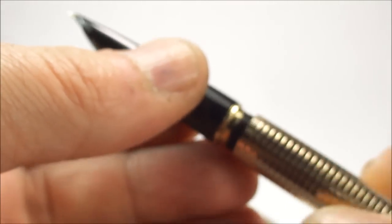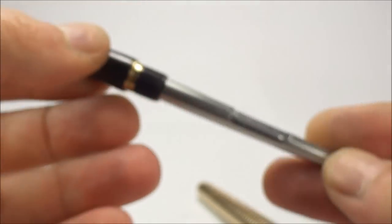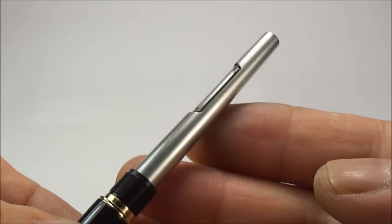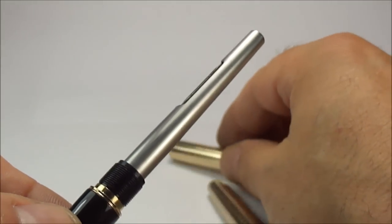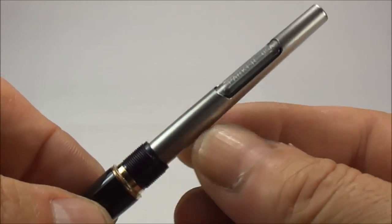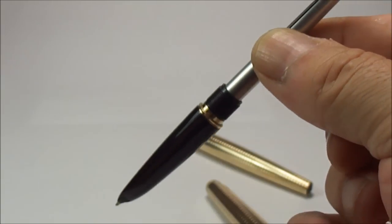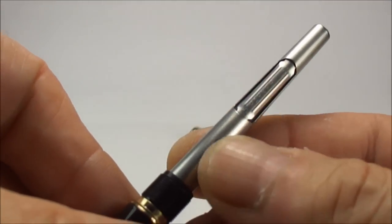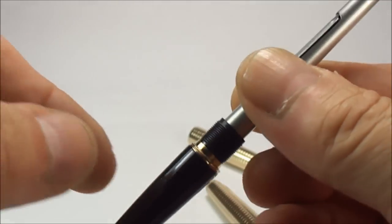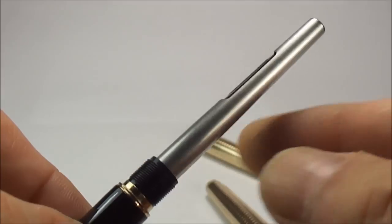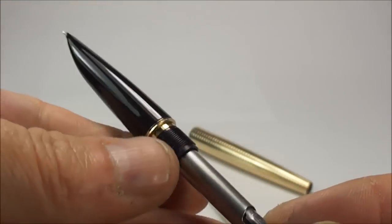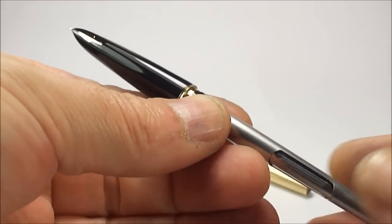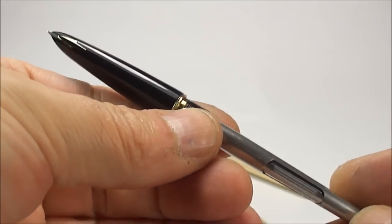If we take the section off, inside it comes with this standard Parker converter. How we use this is we dip the section in our ink, we press this little bar here a couple of times and wait a few seconds and the converter fills with the ink.